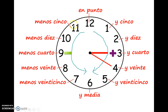On this side of the clock, you count as the arrow indicates and you subtract. For another example, six fifty would be son las siete menos diez, because it's ten minutes before seven. And then we have en punto — on the dot. Please pause the video now and copy these into your notes.